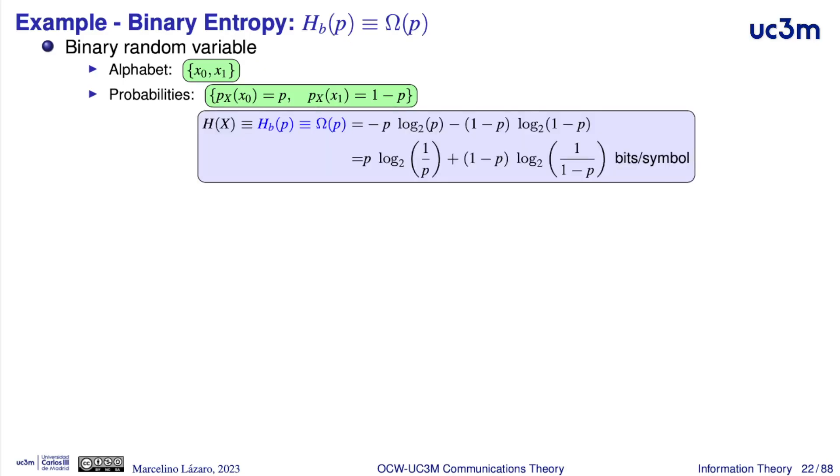If we apply the definition of the entropy with these two probabilities, we have minus p times logarithm of p, and minus 1 minus p, logarithm of this probability, 1 minus p. Similarly, it is possible to use positive signs and to invert the argument in the logarithm to 1 divided by p, or 1 divided by 1 minus p, respectively.